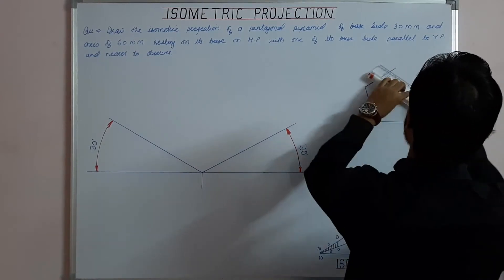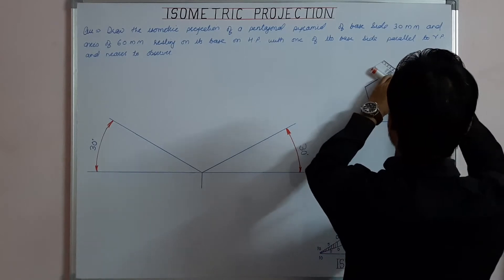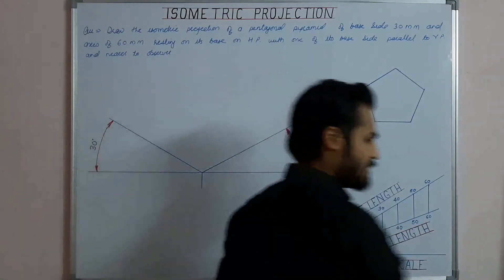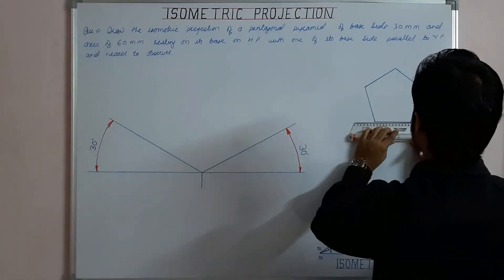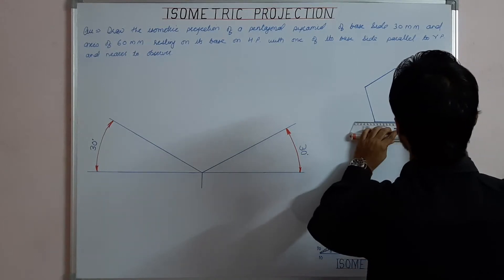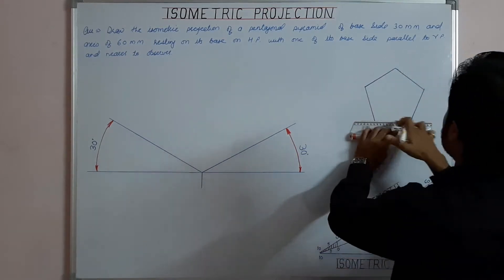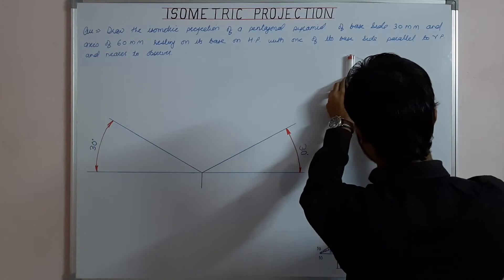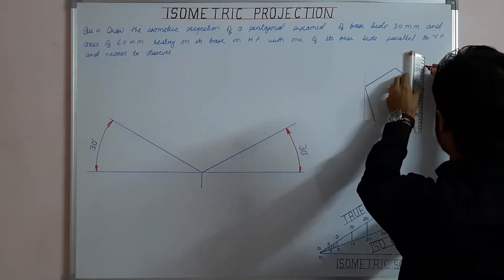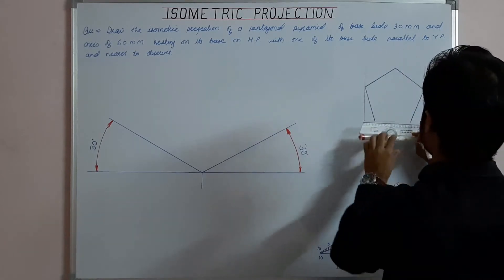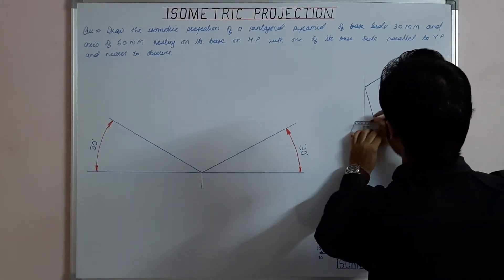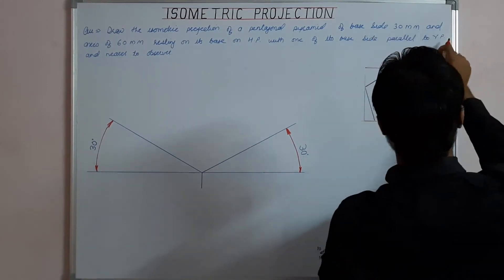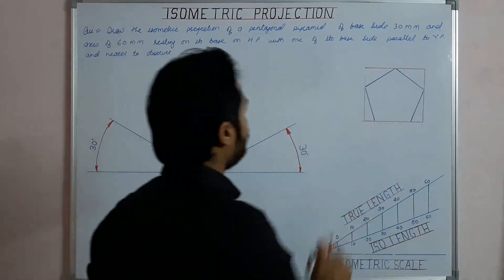Next, we enclose this pentagon inside a box by drawing lines parallel to and perpendicular to the first base side. Taking this side as the first base side and drawing lines parallel to and perpendicular to it from all the corners of the pentagon. This gives us the helping figure.